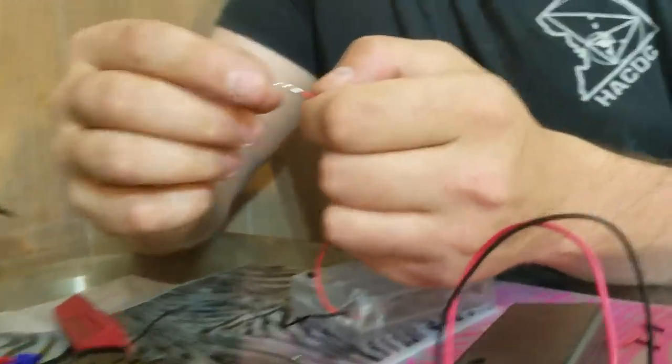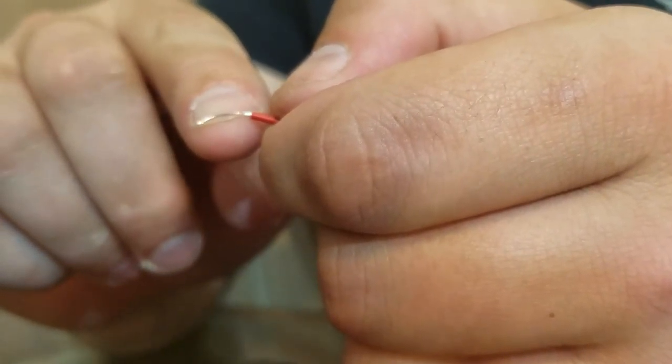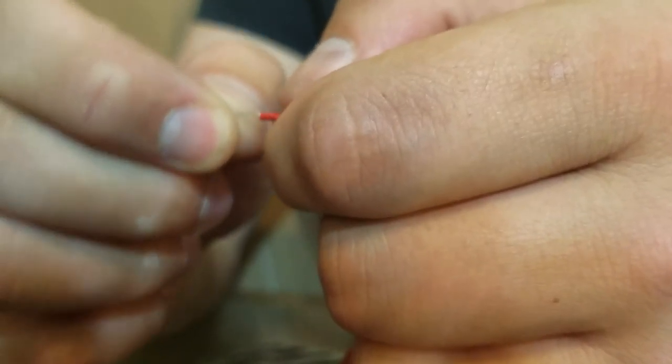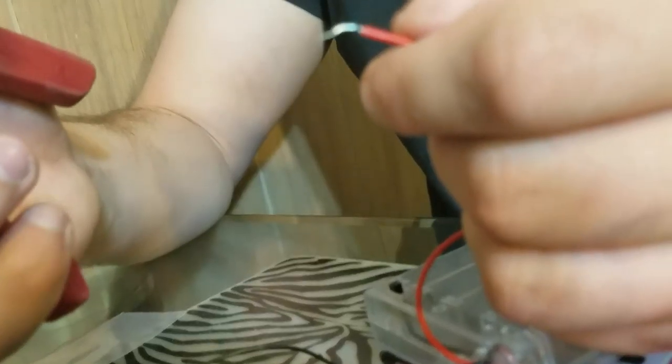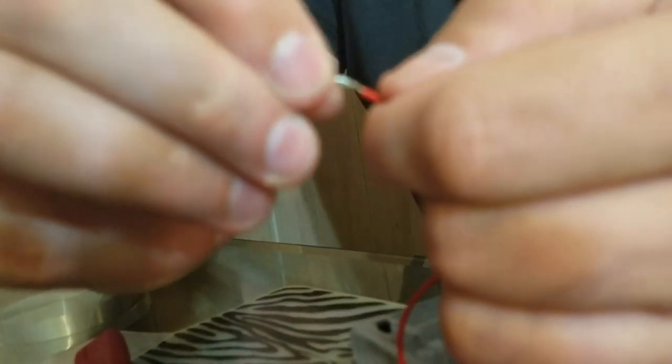Stranded means that there's a bunch of tiny wires grouped together, and they bend more easily. That makes them good for some things, but harder to plug into a breadboard. So I'm going to pull this straight.